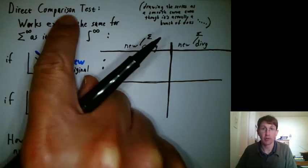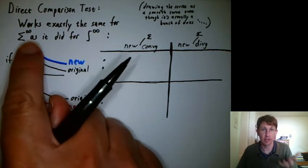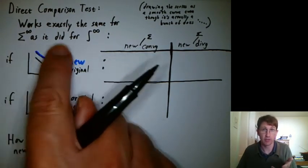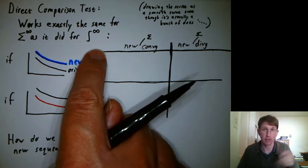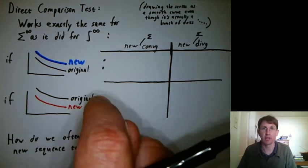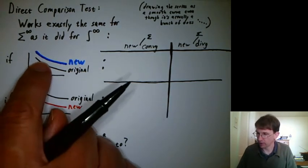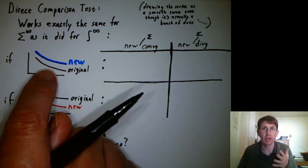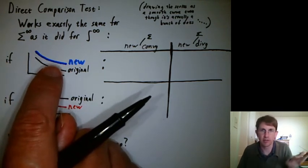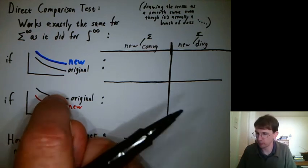So we're doing a direct comparison test, and it works exactly the same for sequences and series as it did for integrals back in that other chapter when we were integrating to infinity. Here I've drawn the sequences as smooth curves just because it's easier to draw and kind of gets the point across more readily.